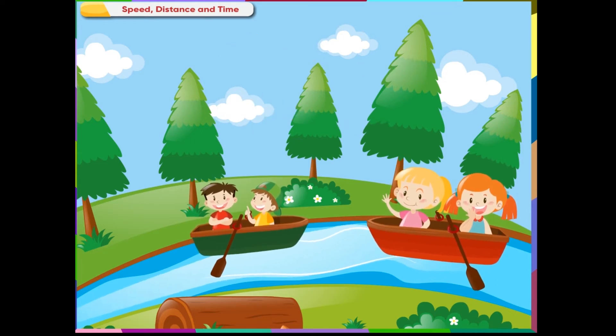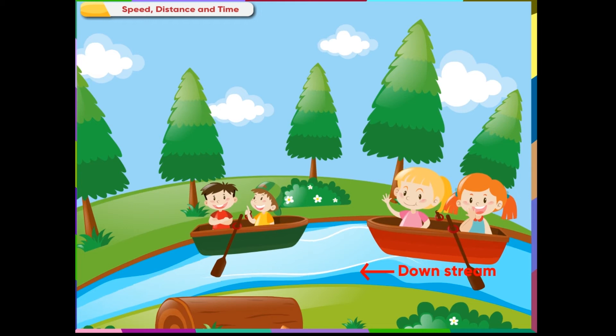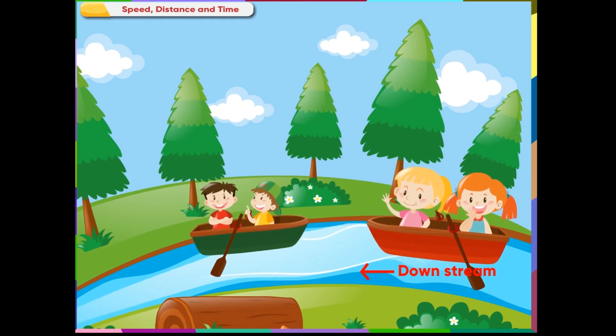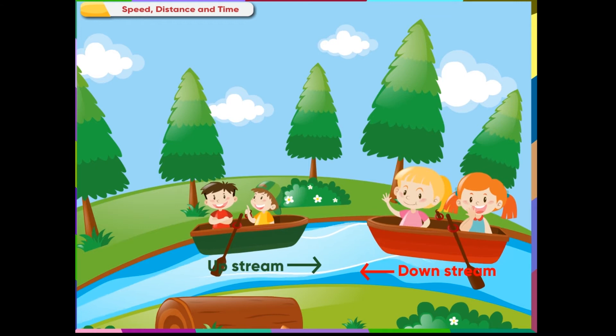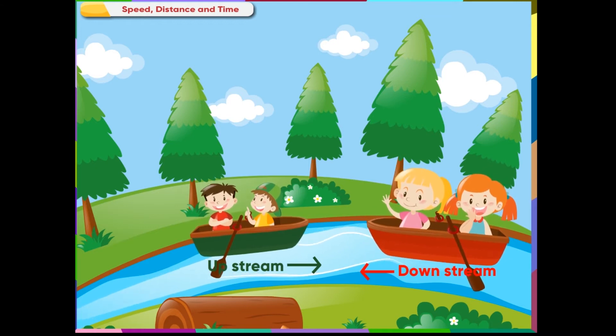The red boat is going downstream with the flow of the water. The green boat is going upstream against the flow of the water.